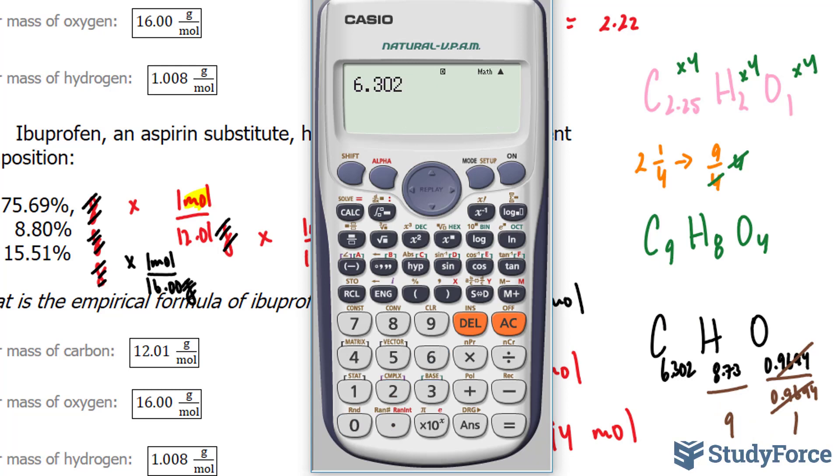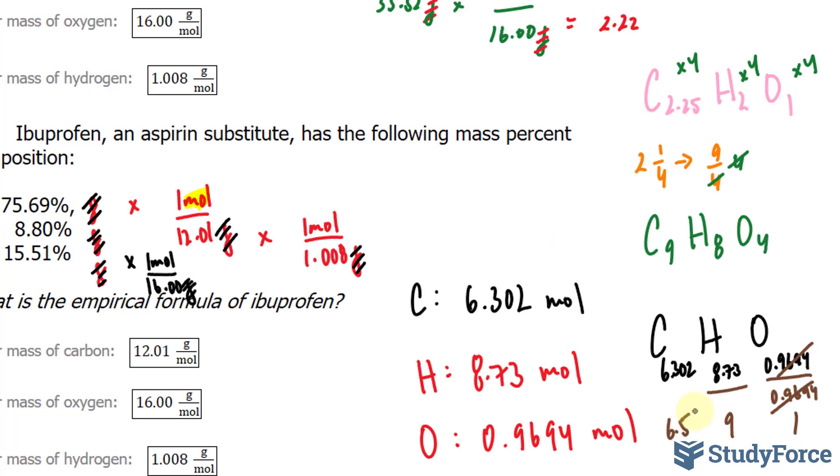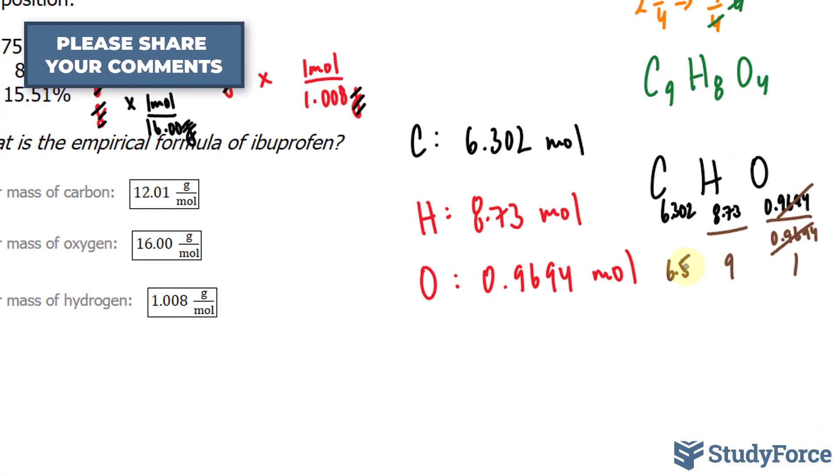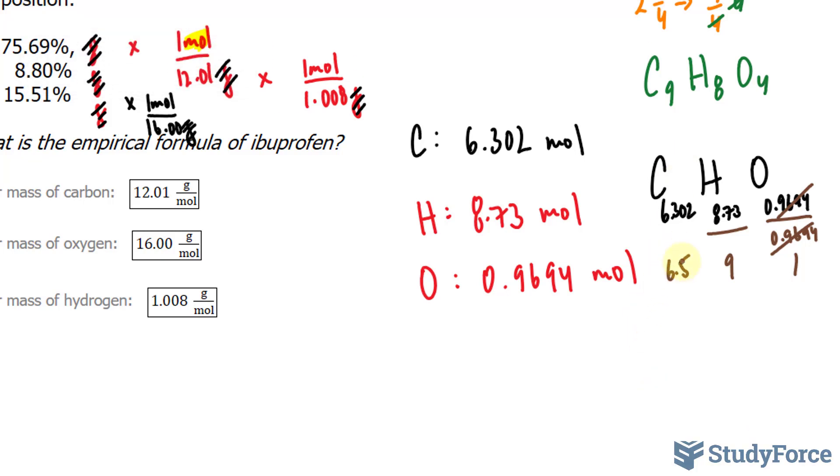6.302 divided by 0.9694, and that gives me 6.5. If I want to get rid of this decimal 5, I multiply each of these numbers by 2. And if I do that, this number will become 13, this will become 18, and this will become a 2.